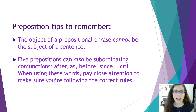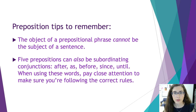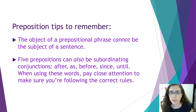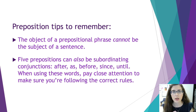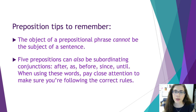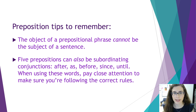Second, there are five words that can be prepositions but can also be subordinating conjunctions, which are words used to introduce a dependent clause. These words are after, as, before, since, and until. When you're working with those five words, you want to pay close attention so you can make sure to use the correct rules for that particular sentence.